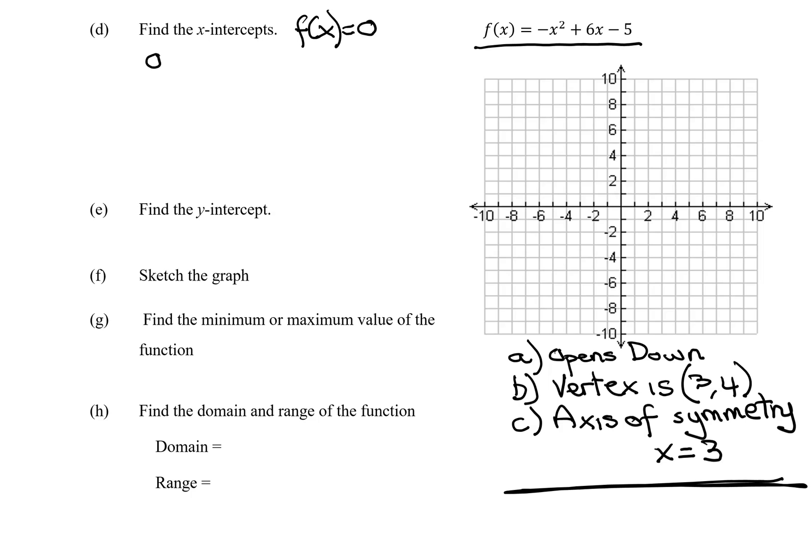So I'm going to get 0 equals negative x squared plus 6x minus 5. And now I have to solve this equation. What type of equation is it? A quadratic equation. I'm going to either factor or use the quadratic formula. But before I do either, I need 0 on one side. Do I have that? Yes.